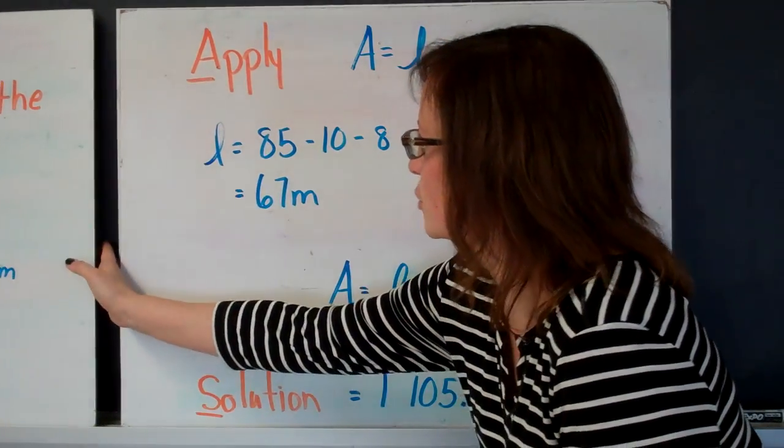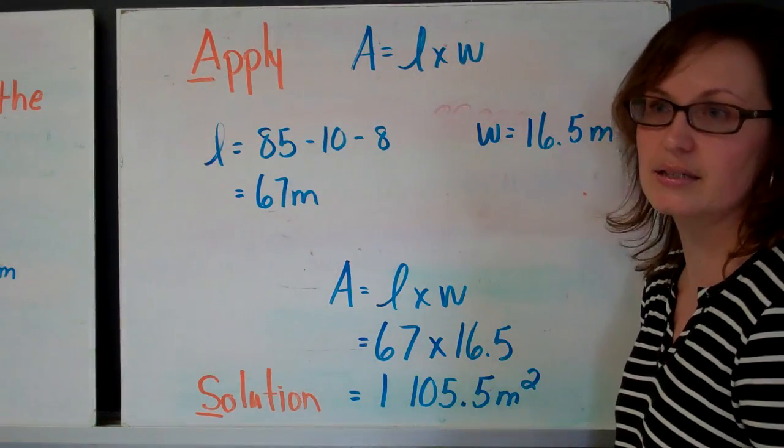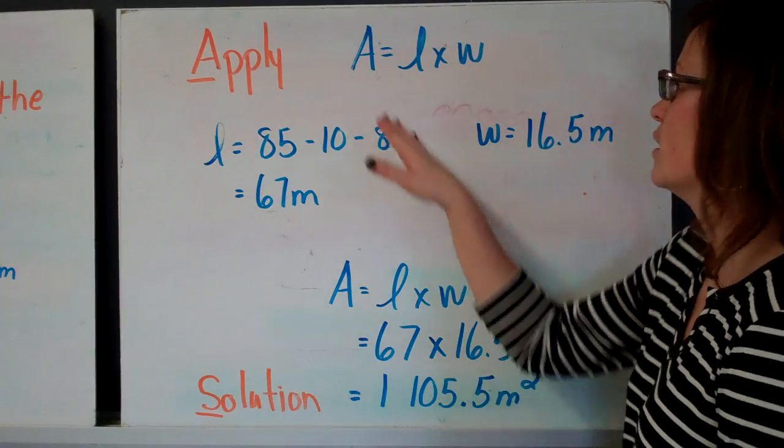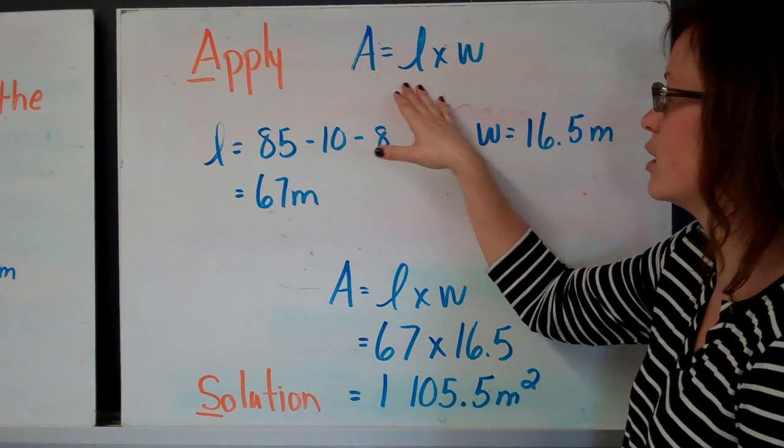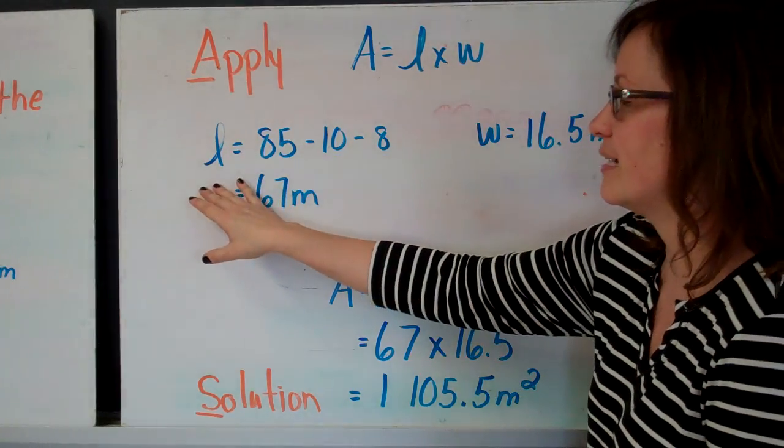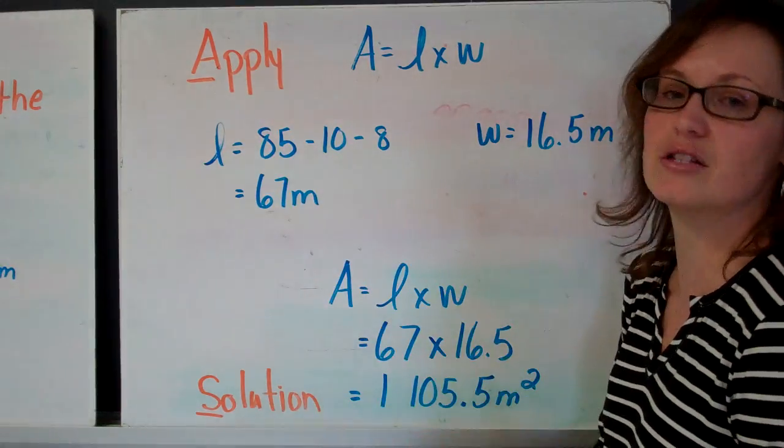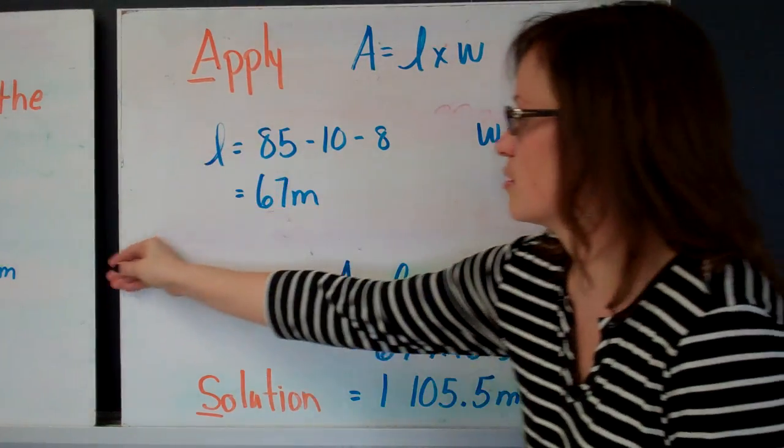All right, so next we're at apply, where we're going to demonstrate how we found our answer. So I know that I'm looking for area, and area equals length times width. I did find the length, but I want to demonstrate how I did that. So I used length.